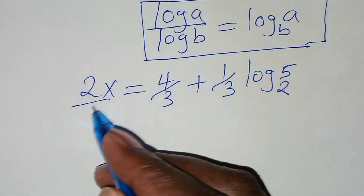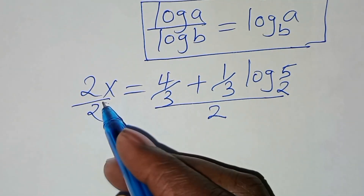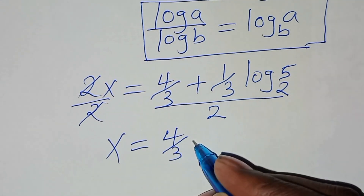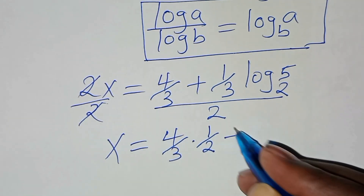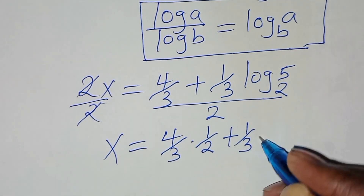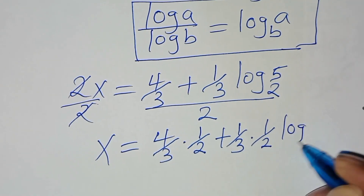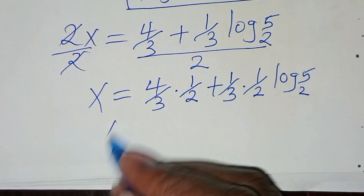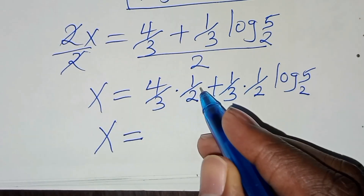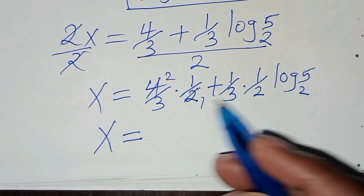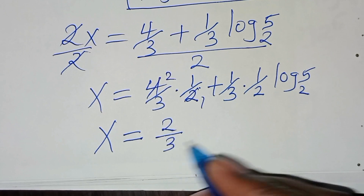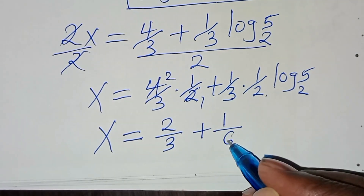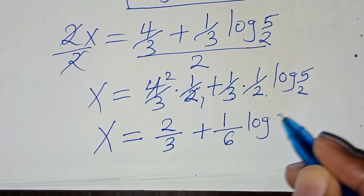So let's divide both sides by 2, so that now x is equal to 4/3 multiplied by 1/2, plus 1/3 multiplied by 1/2 times log base 2 of 5. This gives us x equal to 2/3 plus (1/6)·log base 2 of 5.